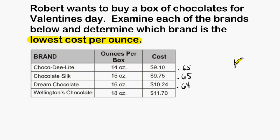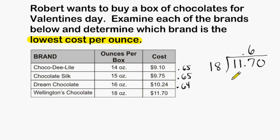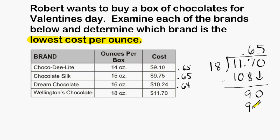For the last brand, we divide $11.70 by 18 ounces. We bring the decimal straight up and divide 18 into 117 — 6 groups of 18 gives 108. 117 minus 108 is 9; we bring down the 0 and 5 groups of 18 divide exactly into 90. So the fourth brand is also 65 cents per ounce. Three of the four brands cost 65 cents per ounce, and the third brand, Dream Chocolate, is the cheapest at 64 cents per ounce.